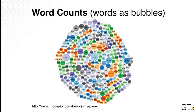A variation of it is the bubble chart. So instead of showing the word, now you scale bubbles based on the word count. It's a small variation, also pretty popular, because as you can see in this example, it's pretty interesting to look at.